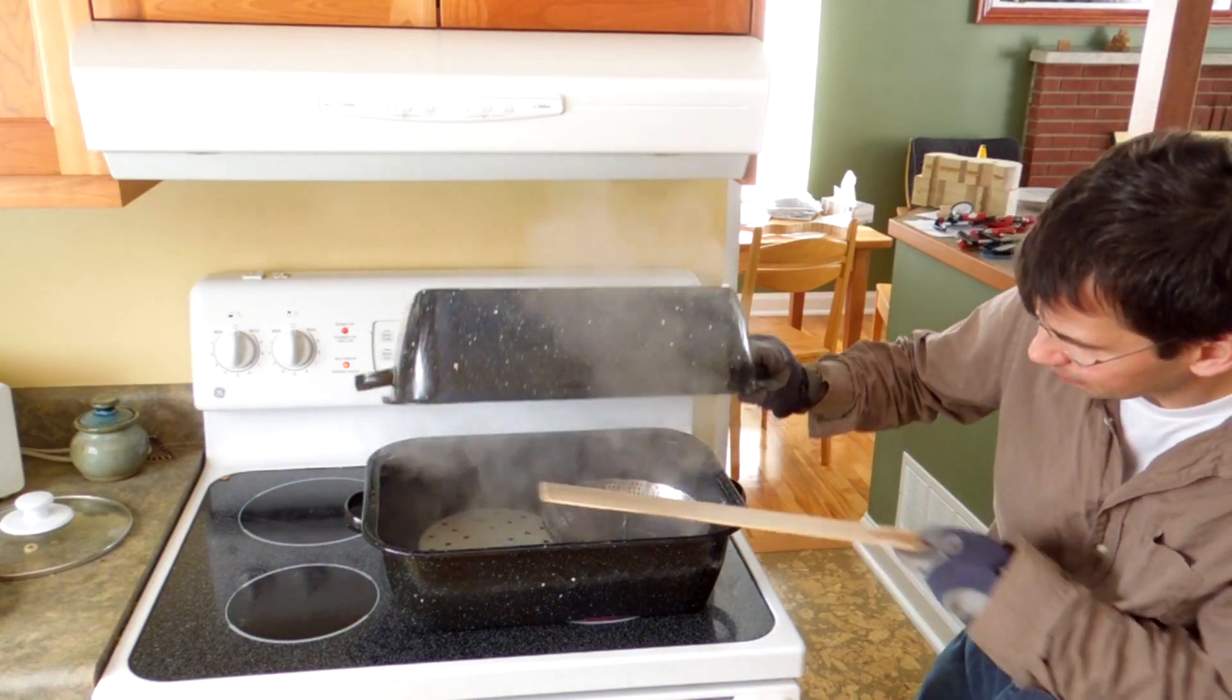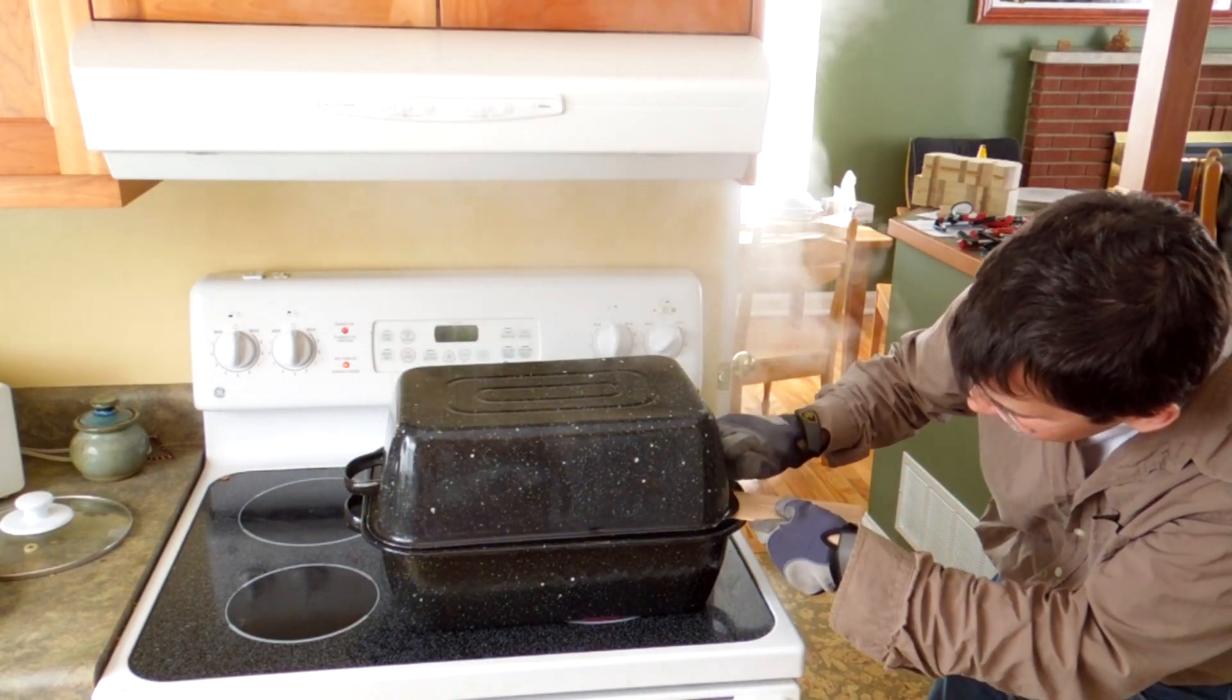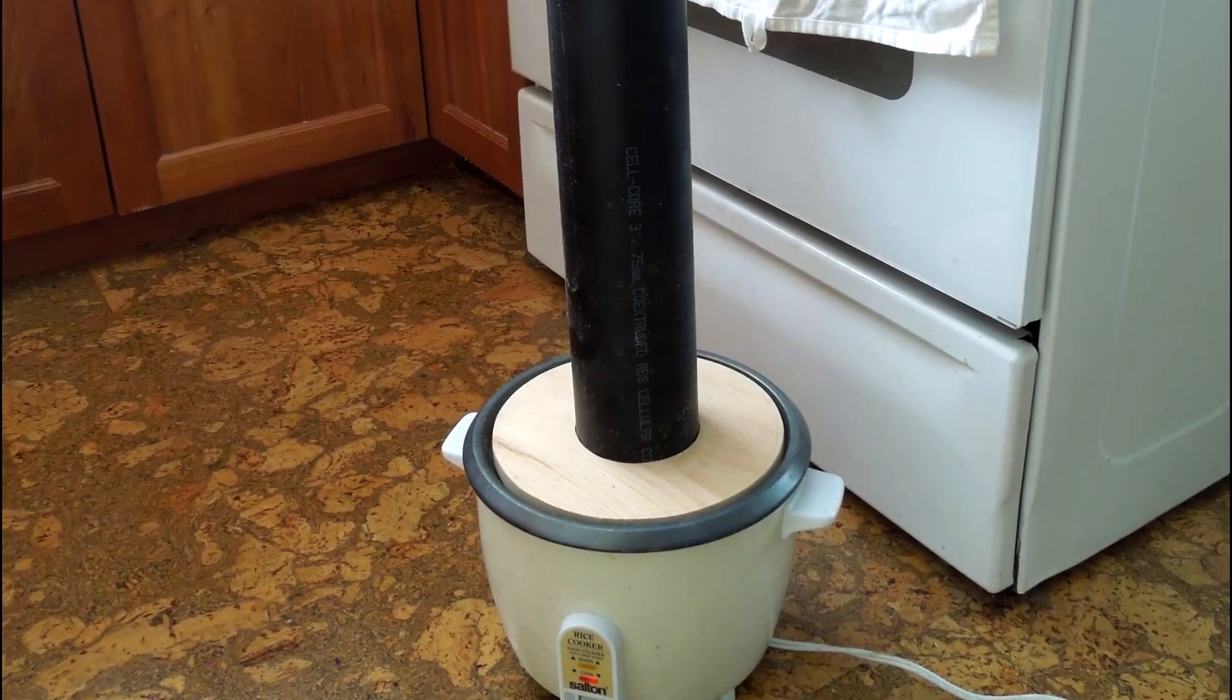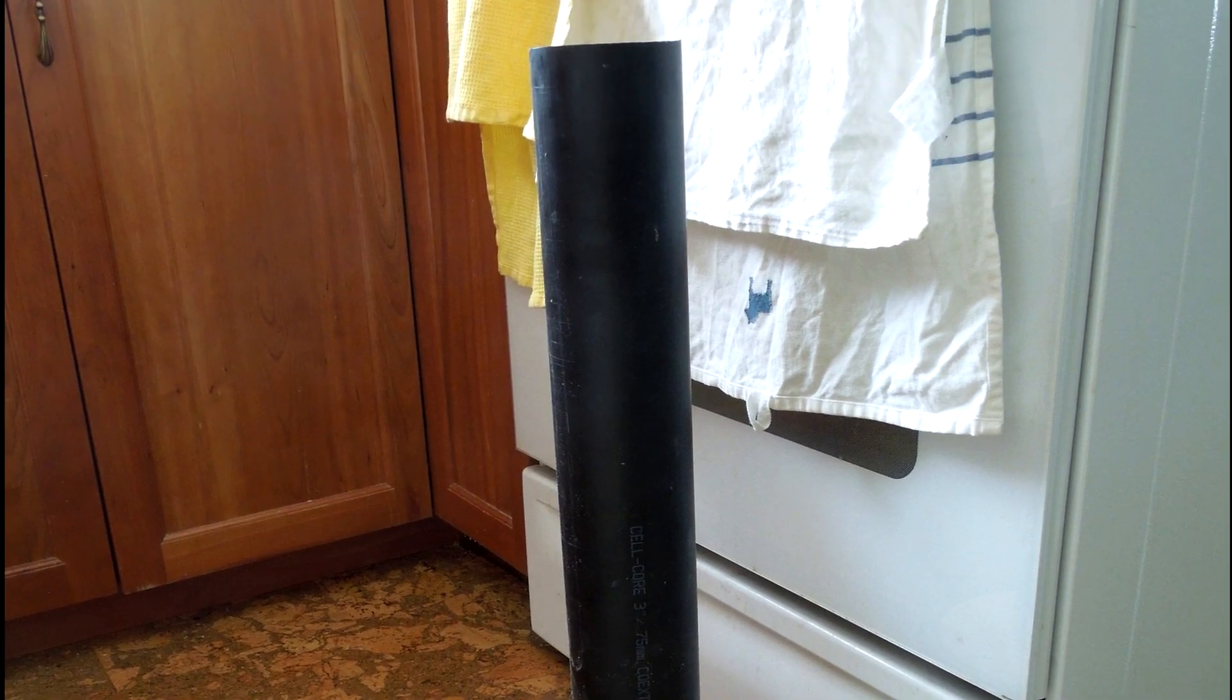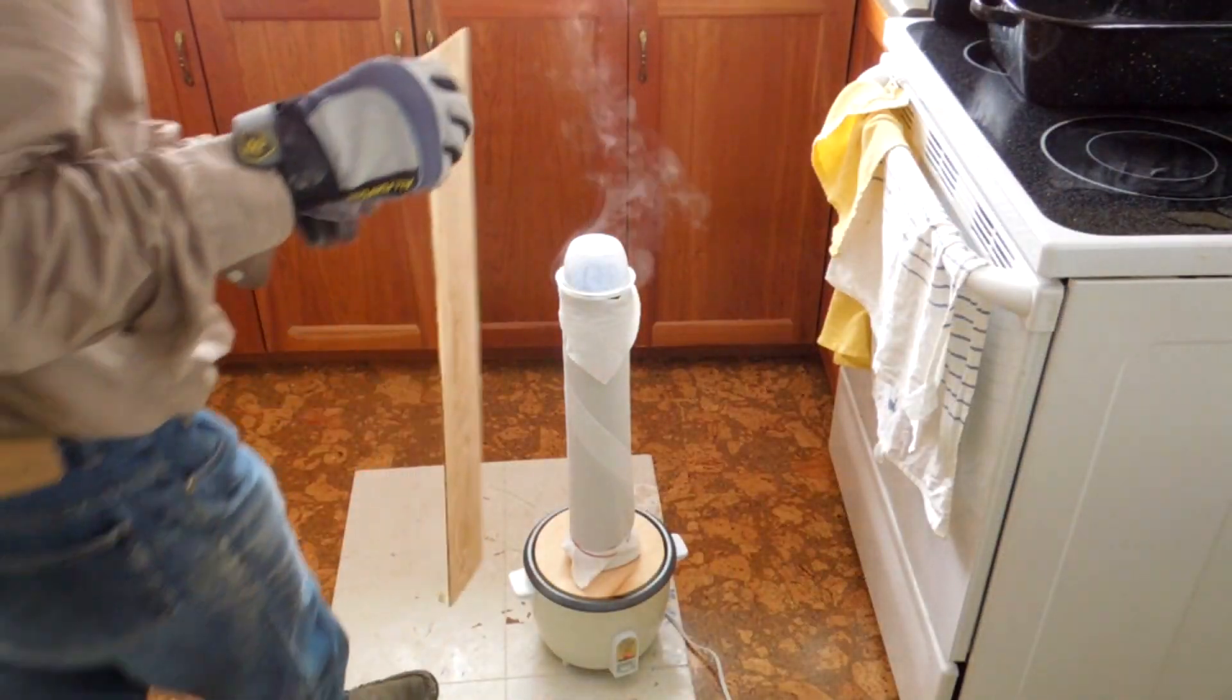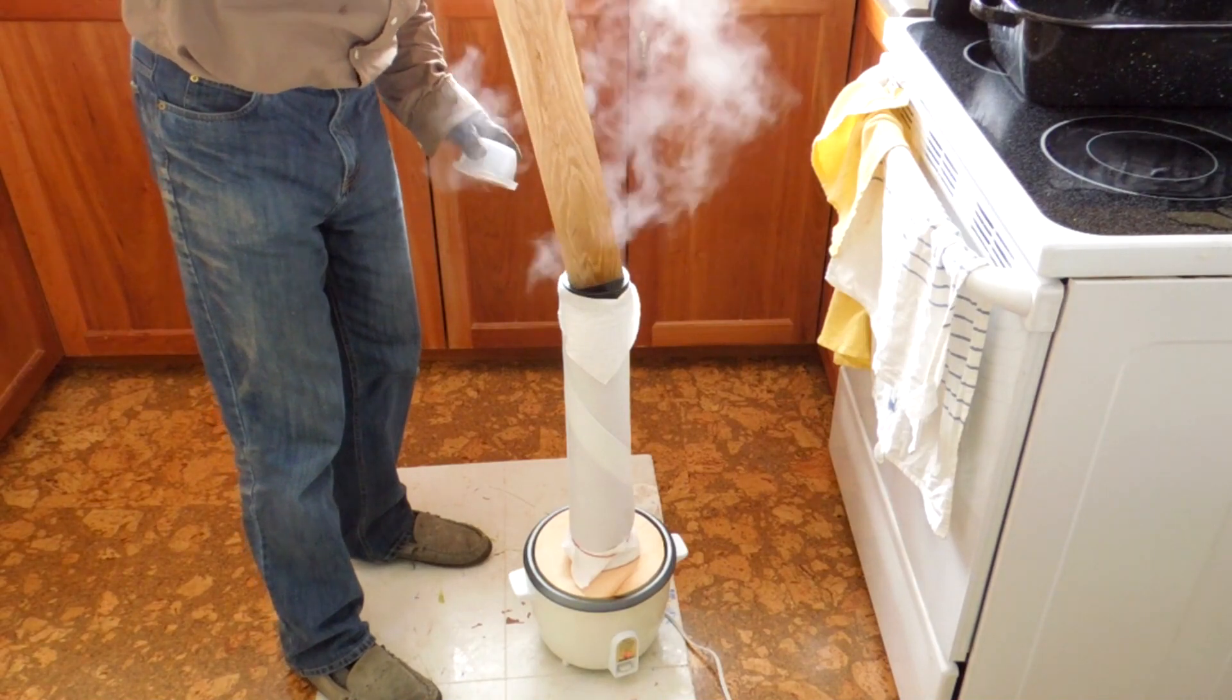The problem with a roasting pan is that it's barely large enough for a tenor size ukulele. I had the idea of making a chimney for my rice cooker. I wrapped that in paper towel for insulation. That works really well for steaming long parts.